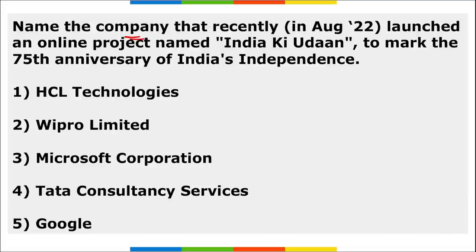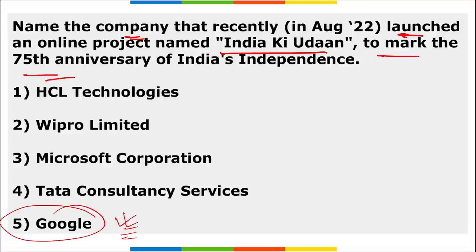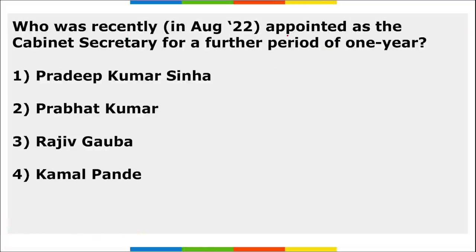Name the company that recently launched an online project named 'India Ki Udaan' to mark 75 years of independence. It was Google. The project is executed by Google Arts and Culture, themed on the unwavering and undying spirit of India over the past 75 years, celebrating India's independence.